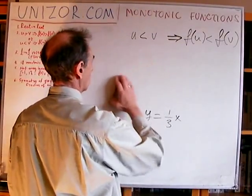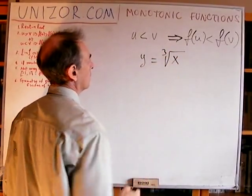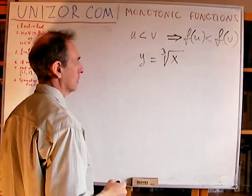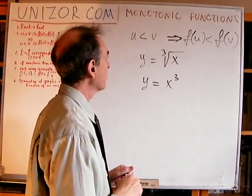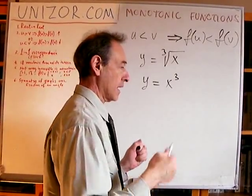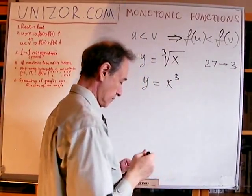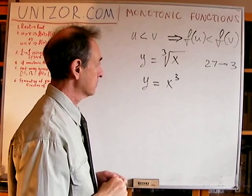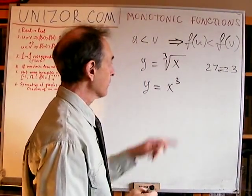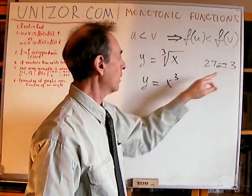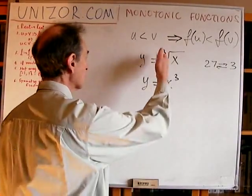Another example: one function is y = cube root of x, and the inverse function is x cubed. If we start with domain element 27 and apply the cube root function, we get 3. Then applying the inverse function, 3 cubed gives us 27 again. The direct function maps a number to another number, and the inverse function maps it back to the original.